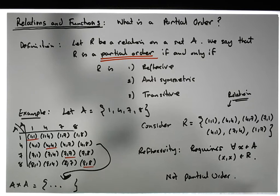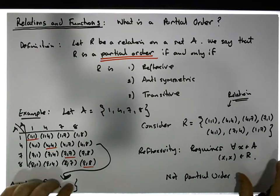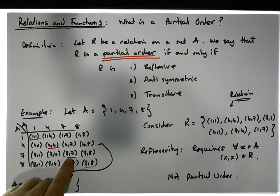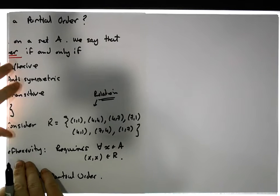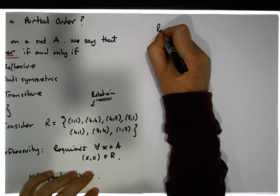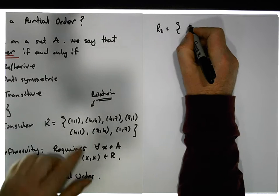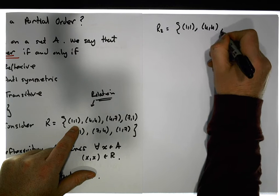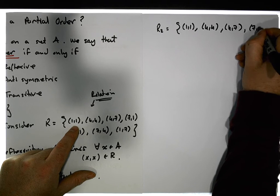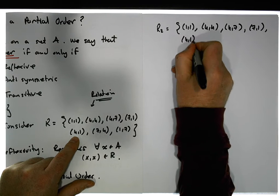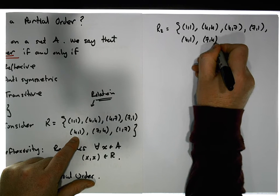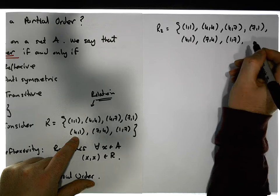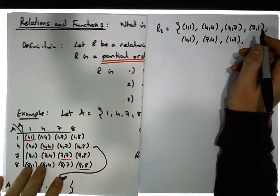What we could do is close under reflexivity — make it reflexive by throwing in the missing pairs. Let's create a new relation R2, which is the set containing: (1,1), (4,4), (4,7), (7,1), (4,1), (7,4), (1,7), and the reflexive pairs that are missing.